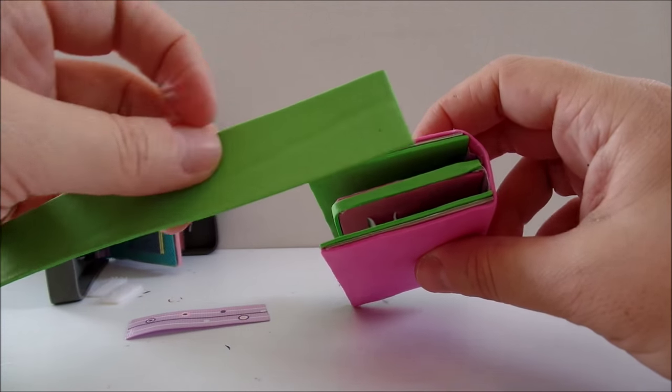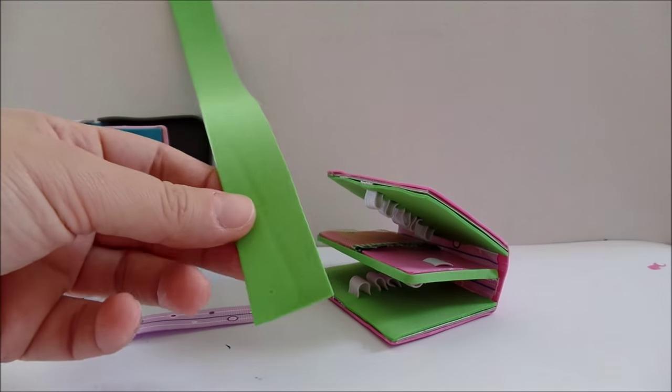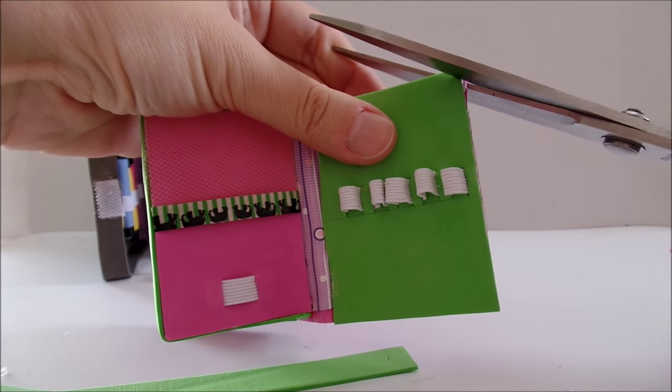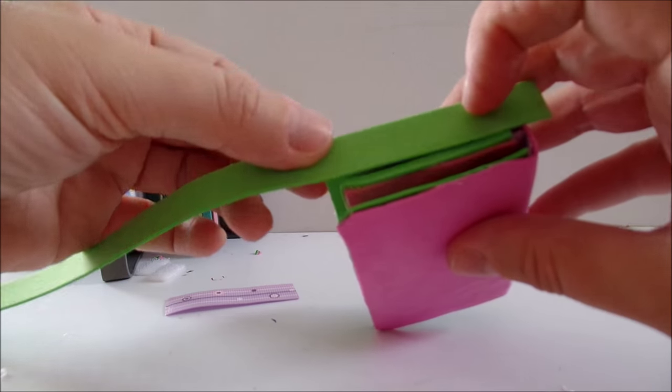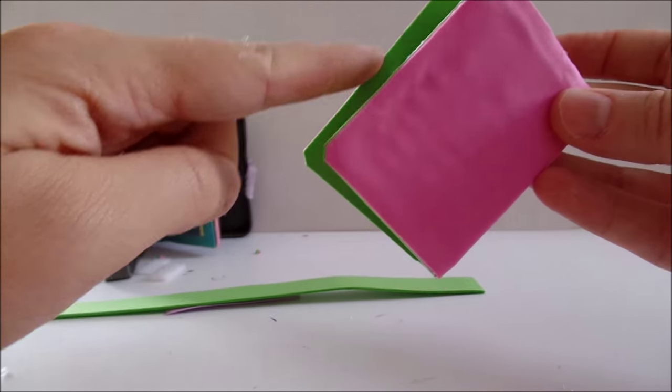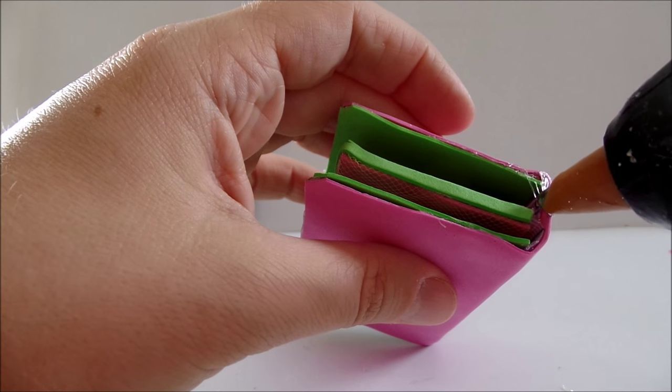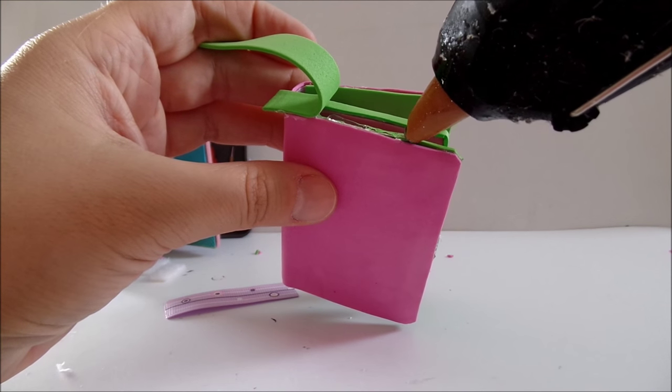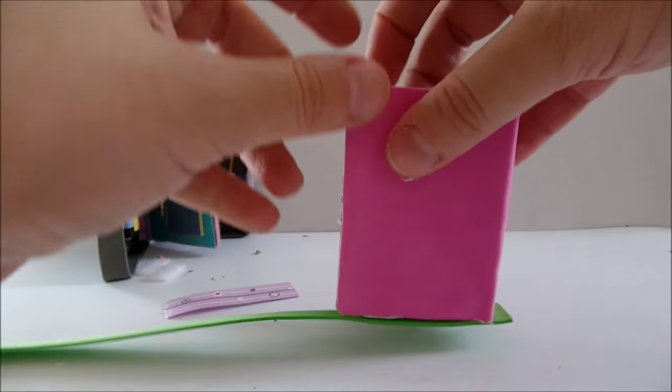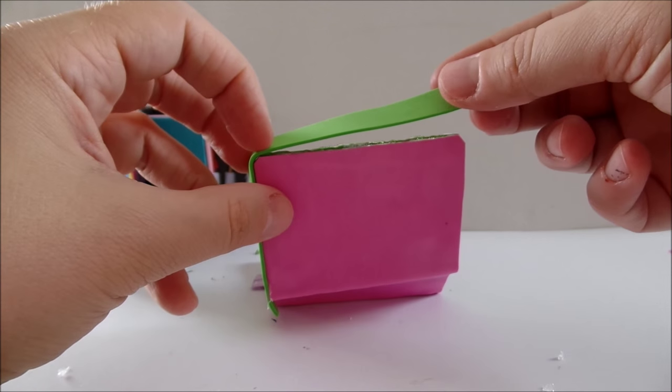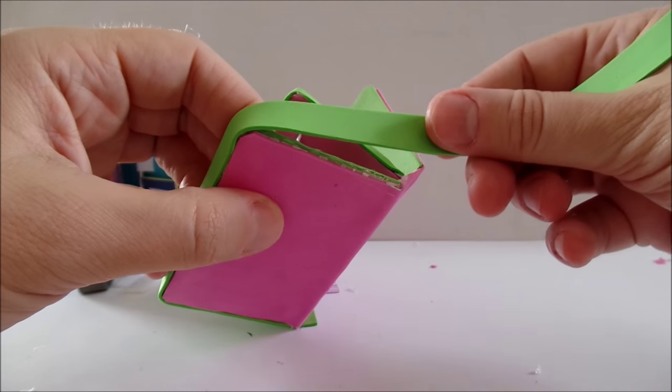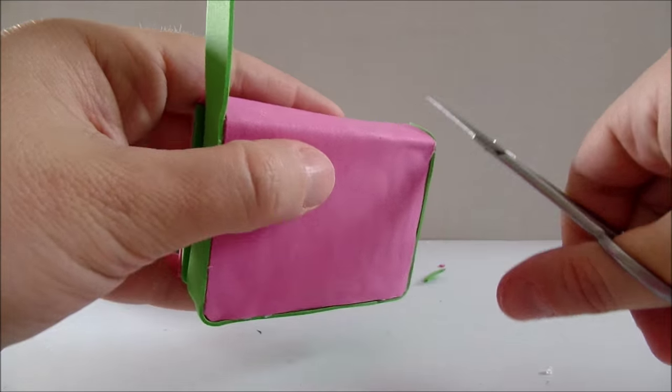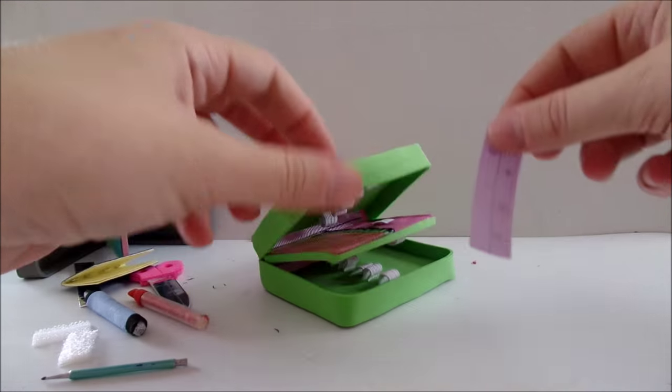Now take a long strip of foam paper. Measure the height, then cut it in two equal strips. Cut off the corners just a bit and start gluing each strip around the pencil case. Set the second piece of foam paper. Now trim off the excess and continue on the second half.